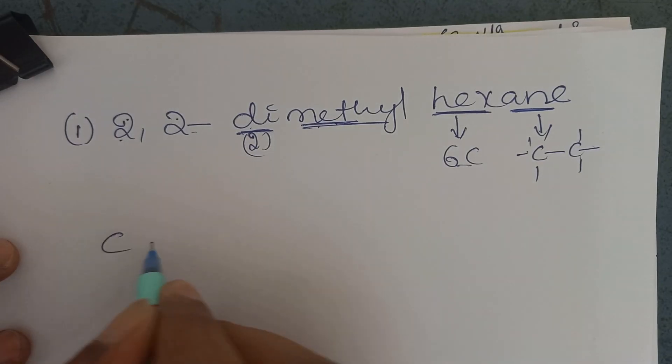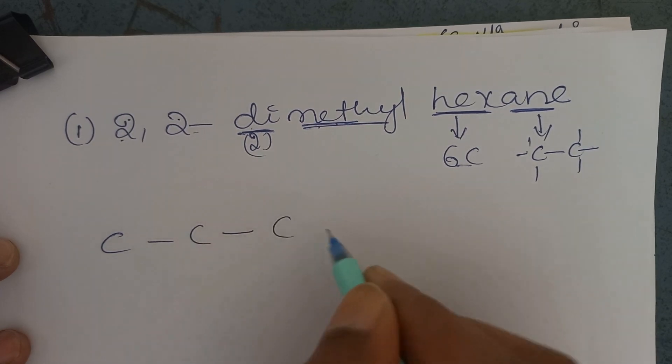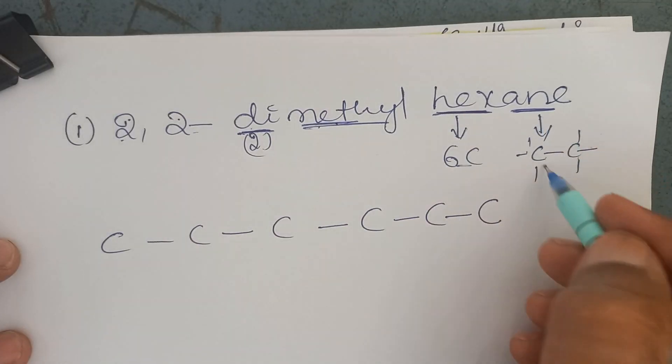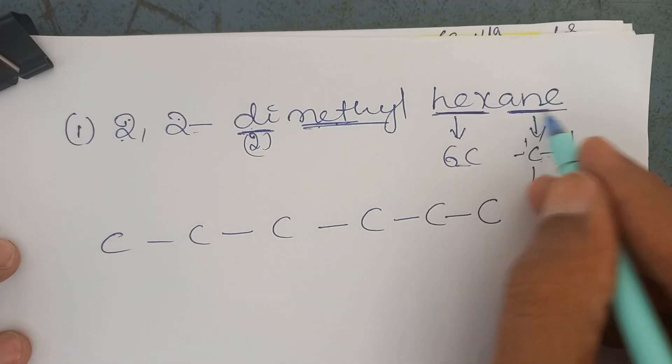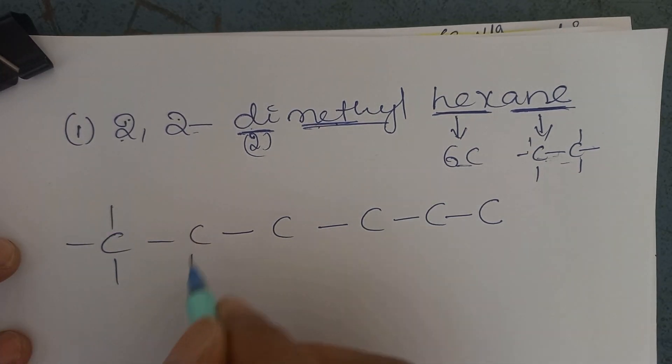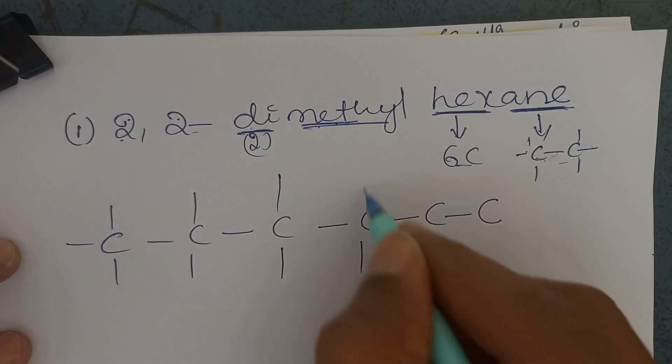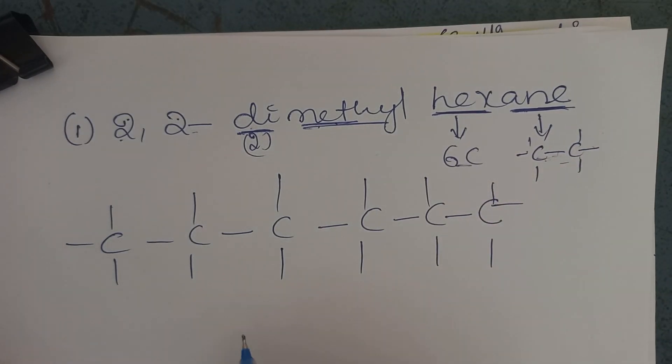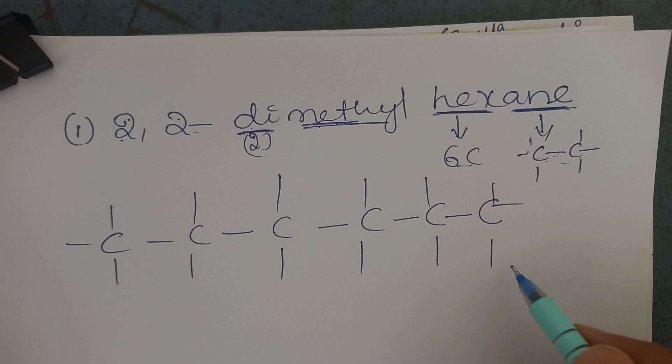6 carbons: 1, 2, 3, 4, 5, 6. So all are joined with single bonds because suffix is ane. Remaining bonds - because every carbon can form 4 single bonds.